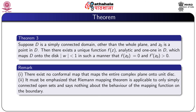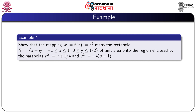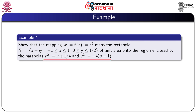Remark: there exists no conformal map that maps the entire complex plane onto the unit disk. The Riemann mapping theorem is applicable only to simply connected open sets and says nothing about the behavior of the mapping function on the boundary. Example: show that the mapping w = f(z) = z² maps the rectangle R = {x + iy : −1 ≤ x ≤ 1, 0 ≤ y ≤ 1/2} of unit area onto the region enclosed by the parabolas v² = u + 1/4 and v² = −4(u − 1).